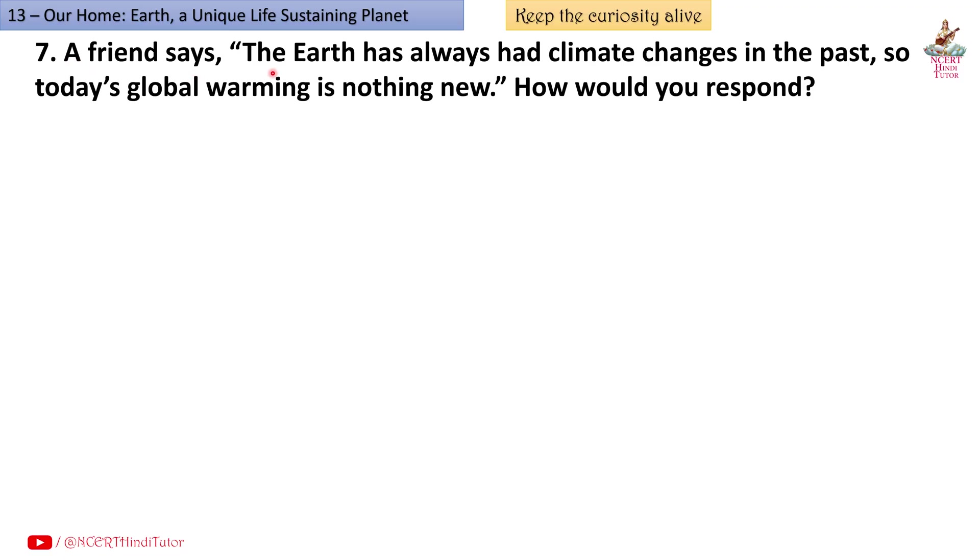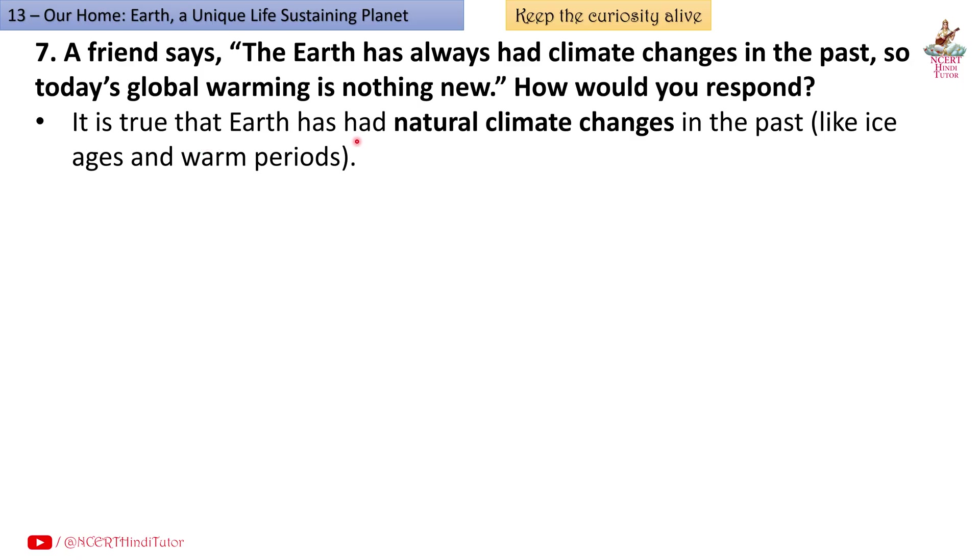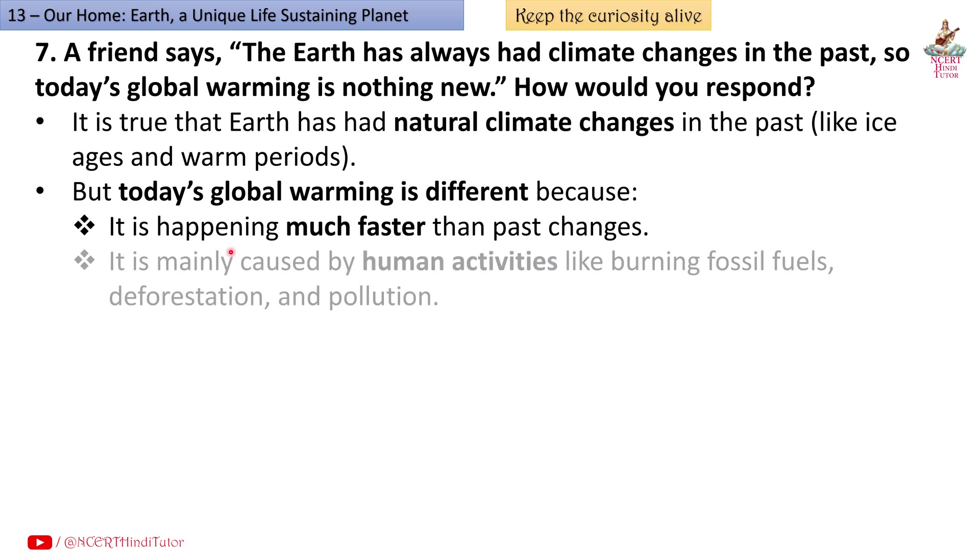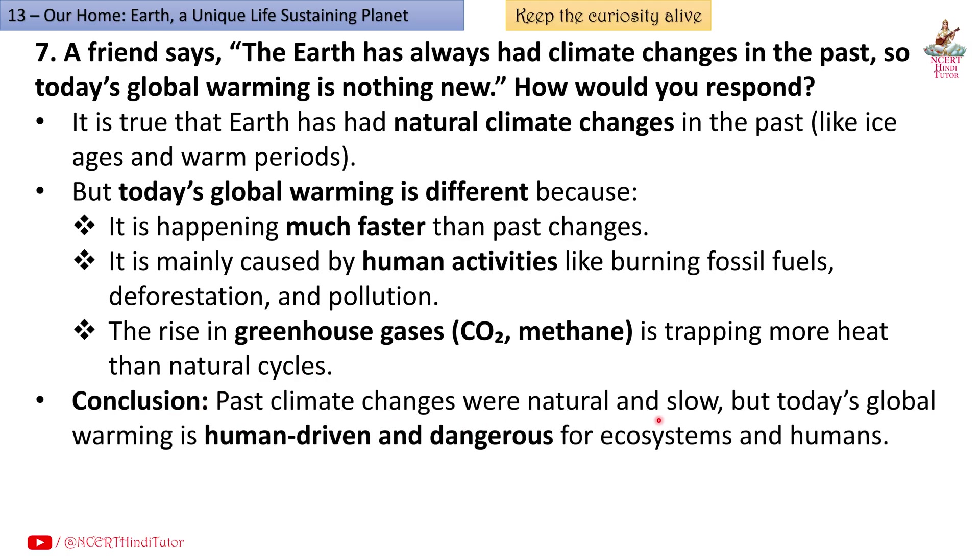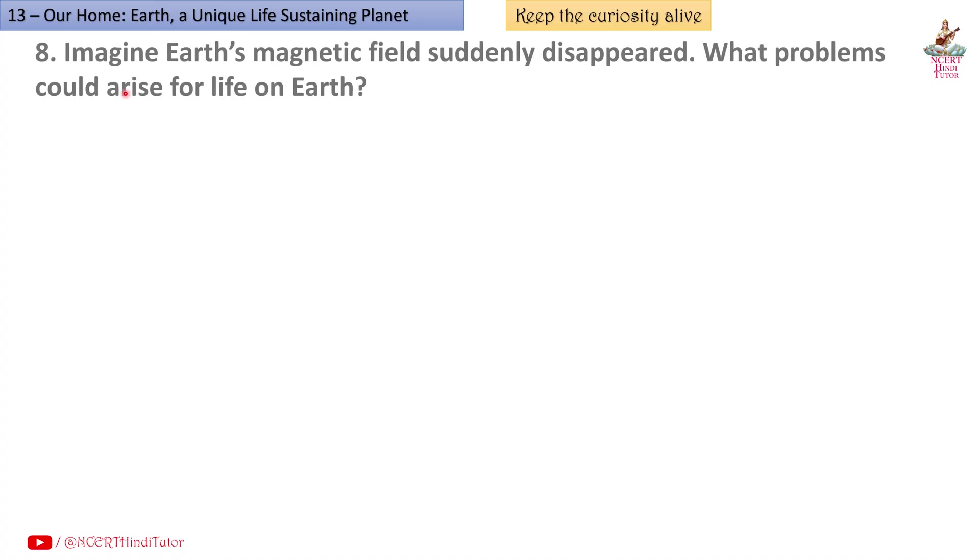Effects on water availability and quality - less rainwater infiltration, groundwater levels drop, more runoff and soil erosion, rivers and lakes polluted with silt, loss of natural water filters like trees and soil, poorer water quality. Conclusion: Cutting forest disturbs the balance of climate, biodiversity and water resources, making the area less suitable for humans and wildlife. Question 7: A friend says 'The earth has always had climate changes in the past. So today's global warming is nothing new.' How would you respond? Answer: It is true that earth has had natural climate changes in the past, like ice ages and warm periods. But today's global warming is different because it is happening much faster than past changes, it is mainly caused by human activities like burning fossil fuels, deforestation and pollution, and the rise in greenhouse gases - CO2, carbon dioxide, methane - is trapping more heat than natural cycles.